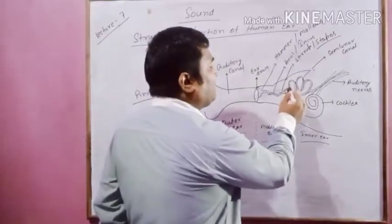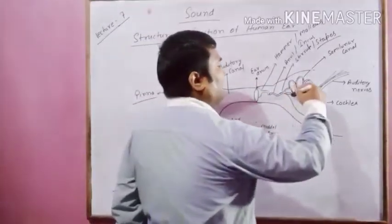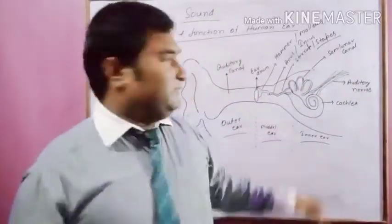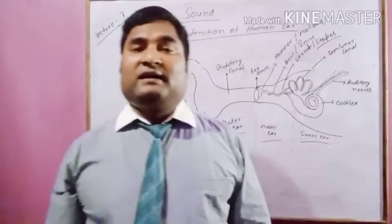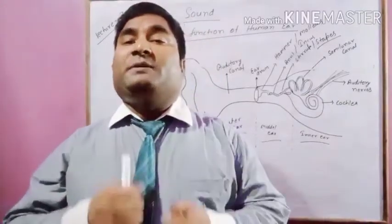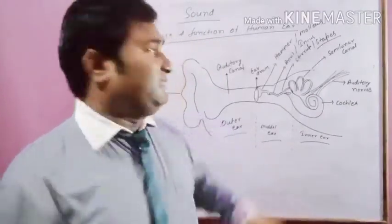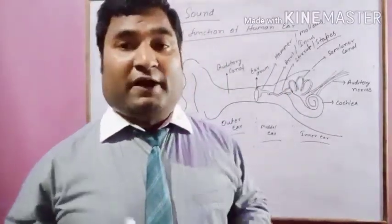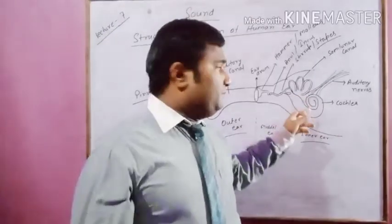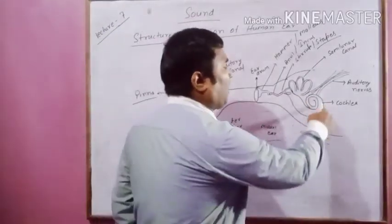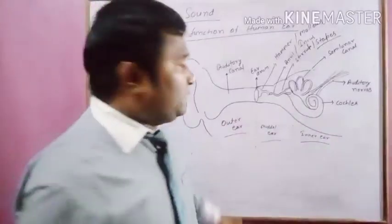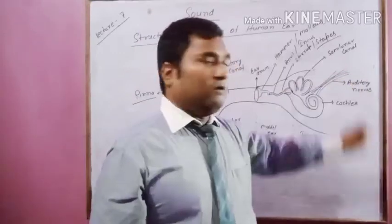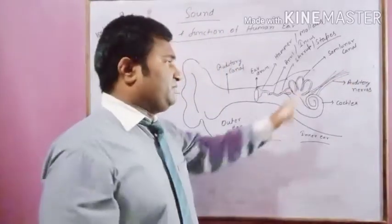And at the end of the stirrup, there is a loop-like structure which is called semicircular canal. This semicircular canal is important for keeping balance of the body. This semicircular canal helps in balancing the body. At the end, there is one more structure that is called cochlea. And from this cochlea, there is a nerve called auditory nerve, which passes the signal.